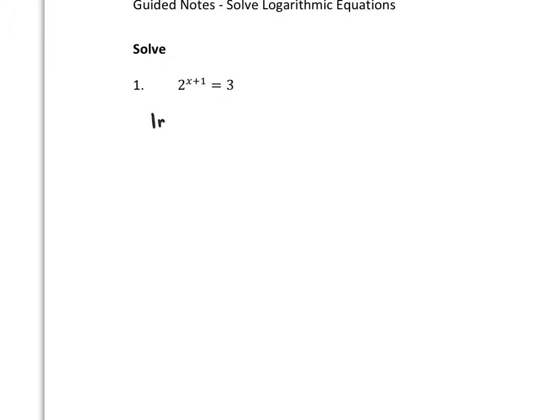So you take the ln of both sides. Now, this x is up in the exponent, but because I have logarithms, I can bring that (x+1) down and multiply it times ln 2. On the right, I have just ln 3.